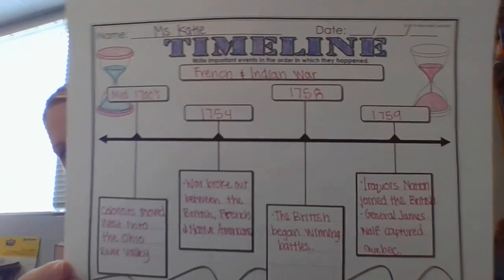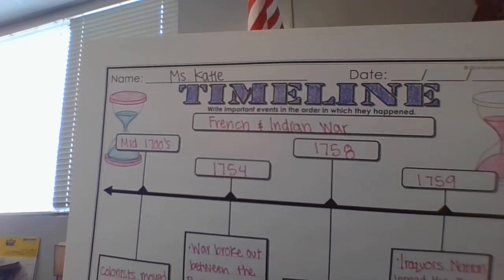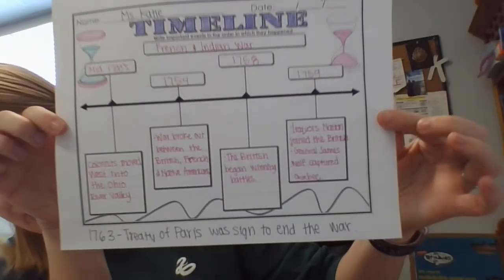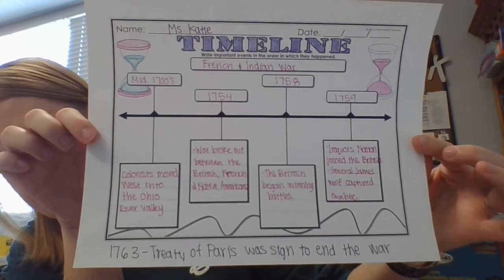The British had so much debt from that war that they taxed the colonists to pay for it. For today's assignment, you have a timeline in your bags that you need to fill in. One date I didn't add — and should have — is that the French and British signed the Treaty of Paris in 1763, so go ahead and add '1763 — Treaty of Paris was signed to end the war' to the bottom. You can pause the video here and fill in your timeline. These dates are very important to remember.